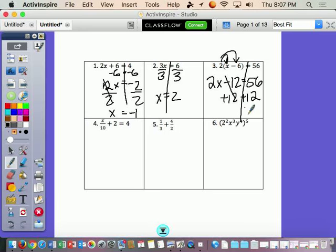56 plus 12 is 68 equals 2x. Divide both sides by 2 to cancel the 2 out. And we get x equals 34.